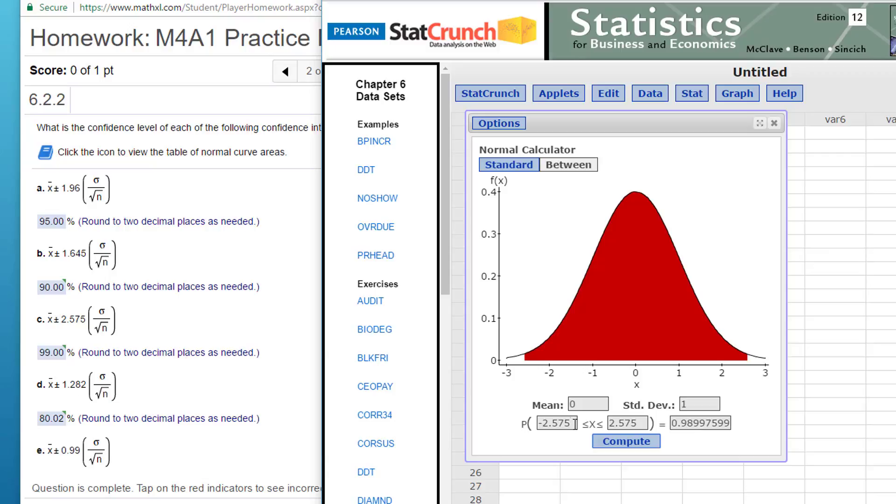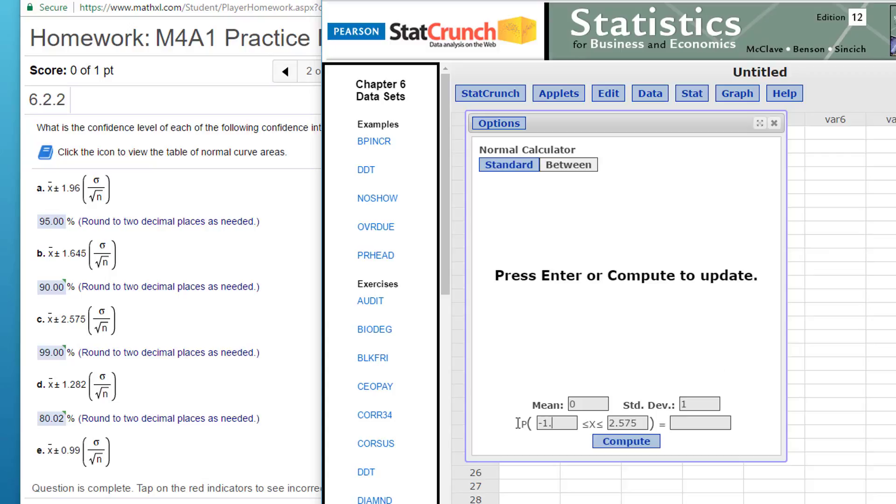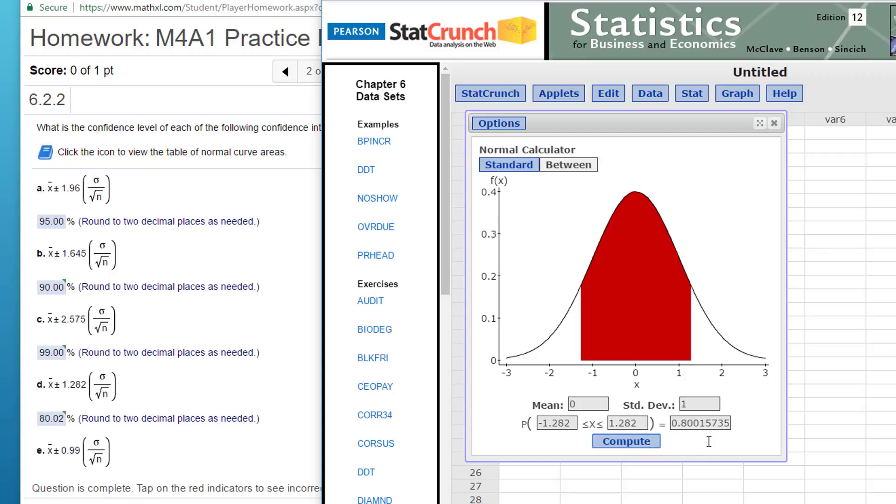The third is minus 1.282 to plus 1.282. Click on compute. That gives me an 80% confidence interval.